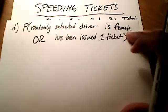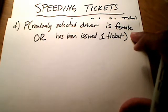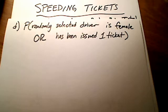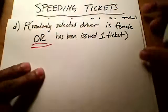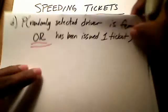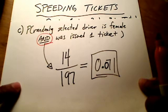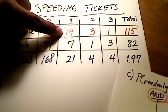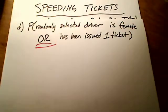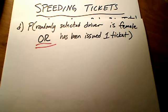Let me show one more example. How about randomly selecting a driver who is female or has been issued one ticket? Do you see the difference between this problem and the one we just did? This time it's female or one ticket. The previous one was female and one ticket. That overlap of 14 was the 'and'. What about the 'or'? Well, I'm definitely going to need the general addition rule for this one.